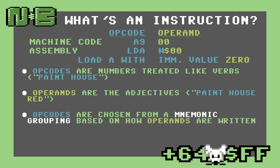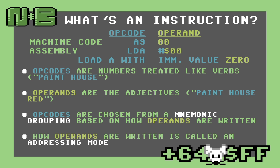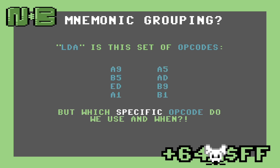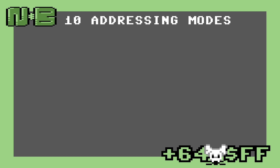Opcodes are chosen from a mnemonic grouping based upon how the operands are written. How operands are written is called an addressing mode. Mnemonic grouping is just a fancy way of saying every mnemonic refers to a whole set of opcodes. For example, the LDA or load-A mnemonic means we want to read a value from RAM into A. But the computer has eight different opcodes to load-A, so how do we choose which opcode we want to use? This is where the addressing modes come into play. Each addressing mode tells us, the programmers, what data to operate on, and the assembler which opcode to use. There are ten addressing modes available, and each has a different representation in assembler.